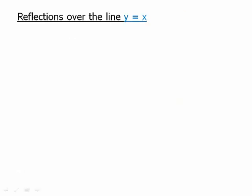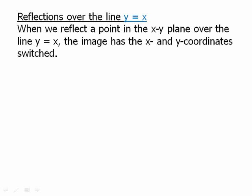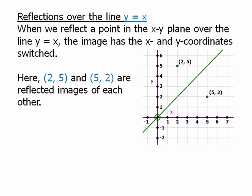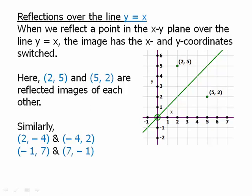When we reflect a point in the xy-plane over the line y = x, the image has the x and y-coordinates switched. So (2, 5) and (5, 2) are reflected images of each other over the line y = x — we swap the x-coordinate and the y-coordinate. Similarly, (2, −4) and (−4, 2) are reflections of each other over y = x, as are (−1, 7) and (7, −1).